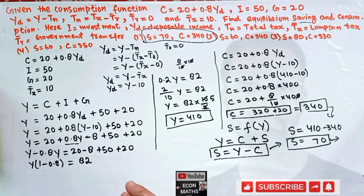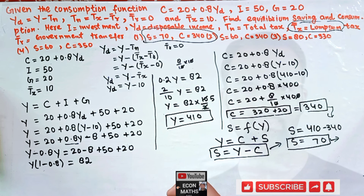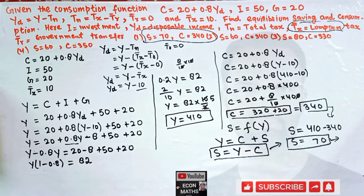I hope this was clear. One important note: the tax here is a lump sum tax, not a proportional tax, so we simply subtract a fixed amount rather than expressing tax as a function of income. If you like these videos, please share and subscribe. I am just a student of economics, so there may be mistakes — please point them out and I will appreciate the correction. Thank you.